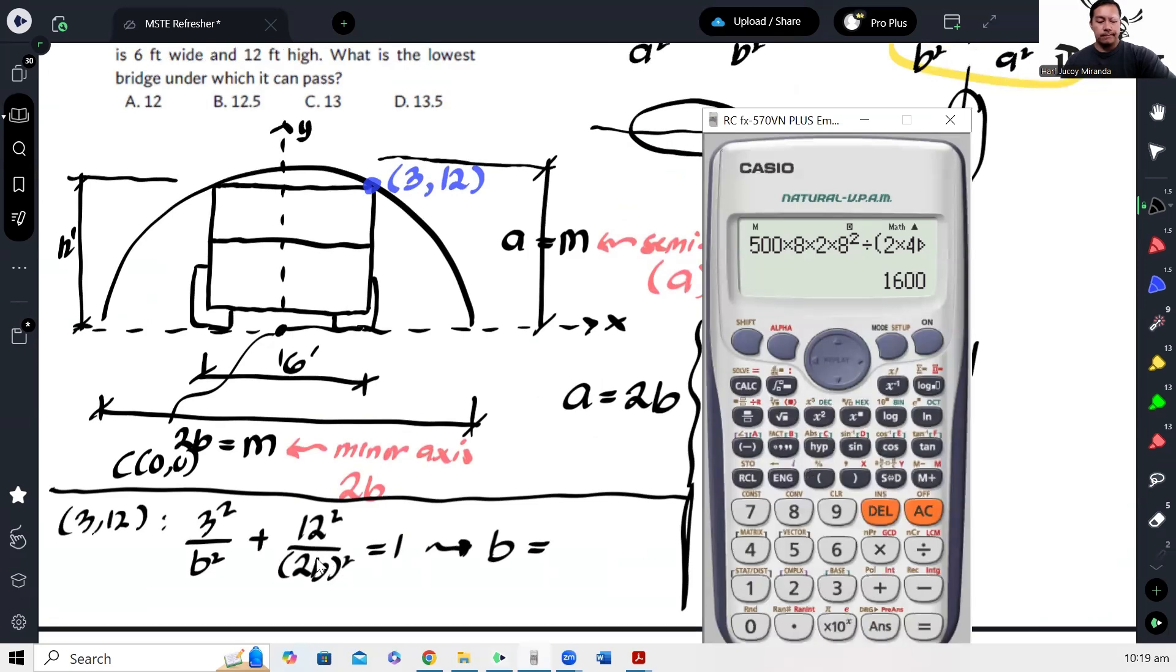So we cross multiply and square root. Square root of 3 squared plus 12 squared over 2 squared, so 3 times square root of 5, or 6.7.